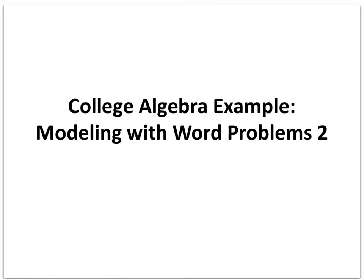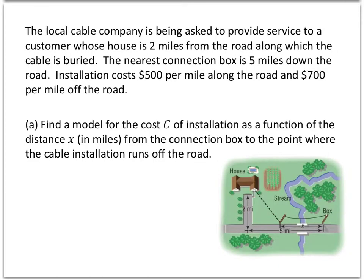In this video, we'll do another example of solving a word problem using mathematical modeling. So here's the story for this one. The local cable company is being asked to provide service to a customer whose house is 2 miles from the road along which the cable is buried. The nearest connection box is 5 miles down the road. Installation costs $500 per mile along the road and $700 per mile off the road. And we're being asked to find a model for the cost of the installation as a function of the distance from the connection box to the point where the cable installation runs off the road.